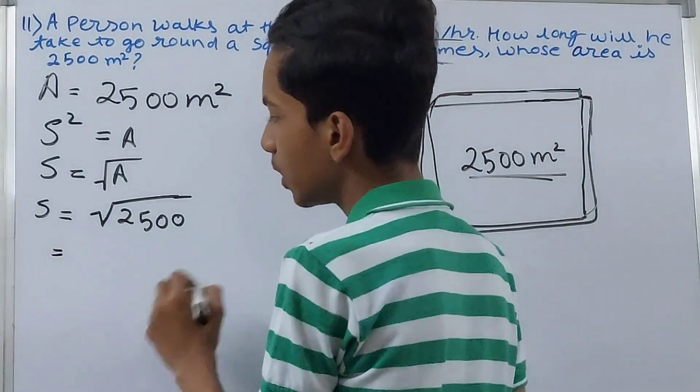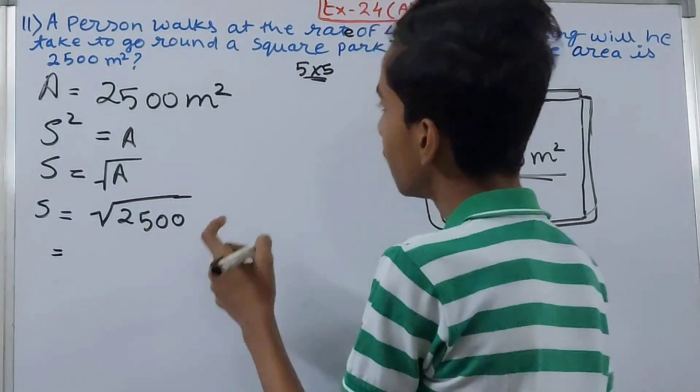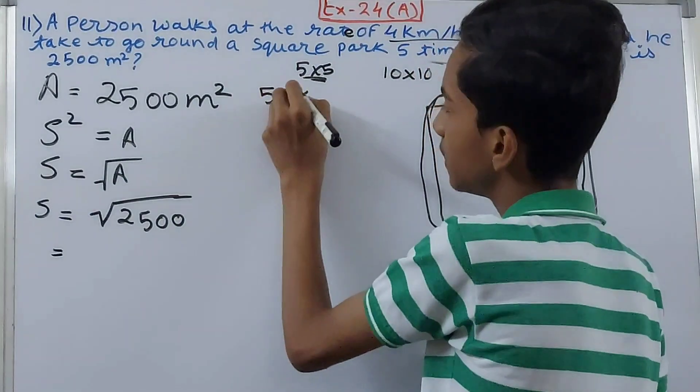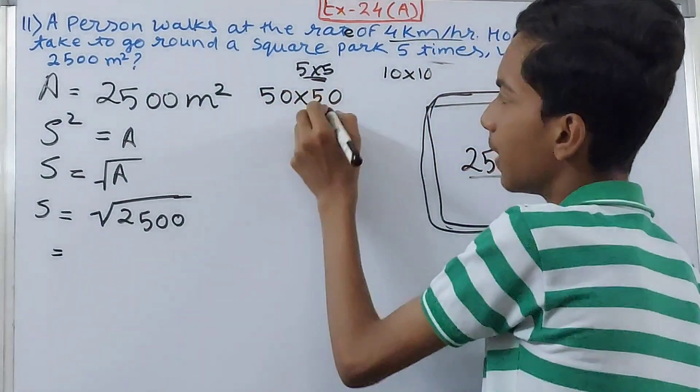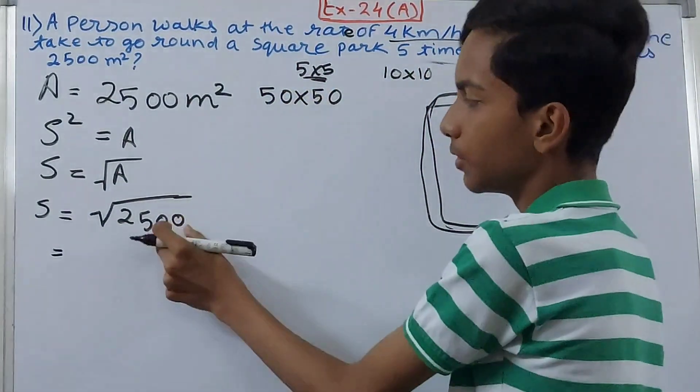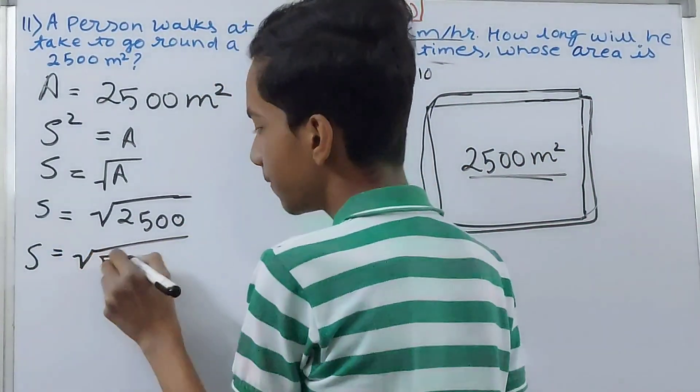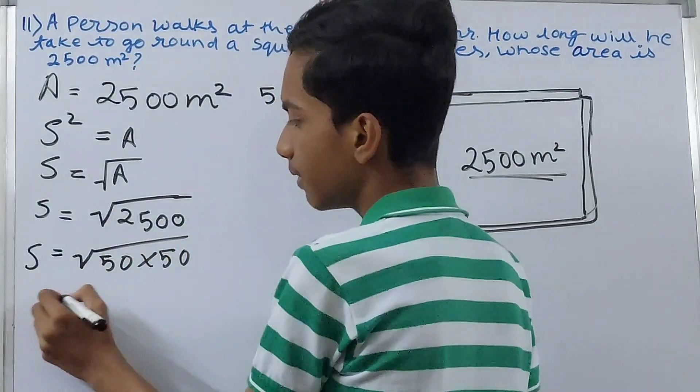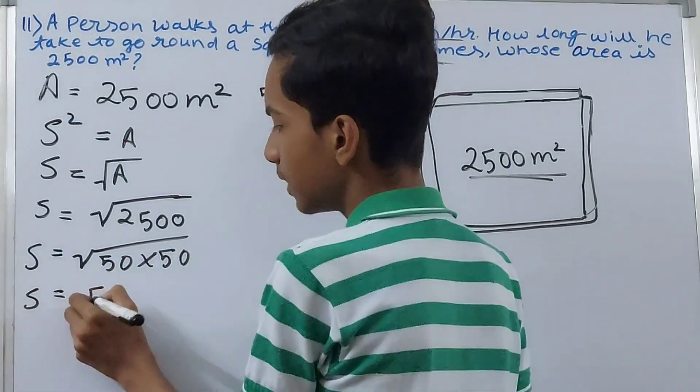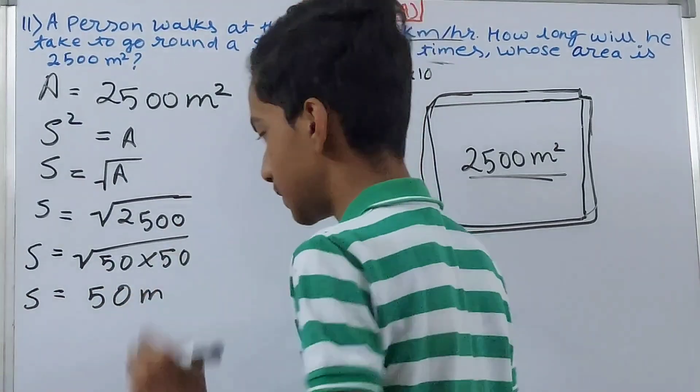This can be written as side equals square root of 50 times 50, which gives us 50 meters. This is the length of the side of the square.